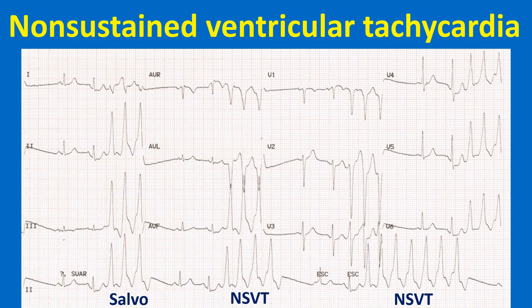Ventricular ectopic beats originating from the right ventricular outflow tract (RVOT) represent one of the commonest forms of benign ventricular ectopy. But at times, RVOT can be the origin of a ventricular tachycardia — either paroxysms of non-sustained ventricular tachycardia or sustained ventricular tachycardia. RVOT VT can be induced by exercise and has a left bundle branch block morphology — wide QRS negative in V1 and positive in V6 — with inferior axis, positive in leads II, III, and aVF.